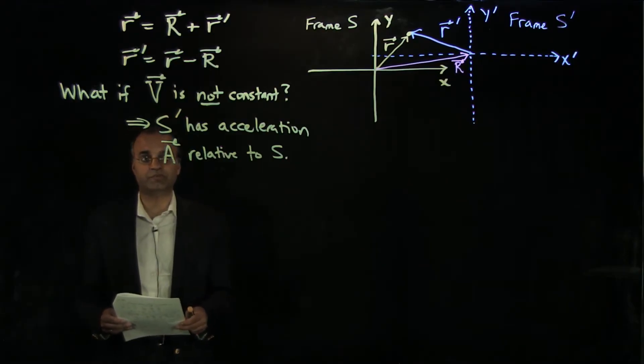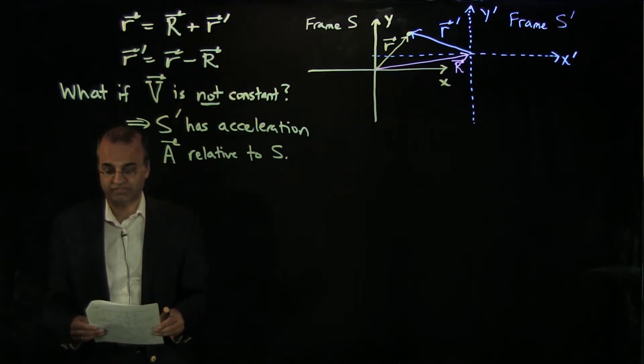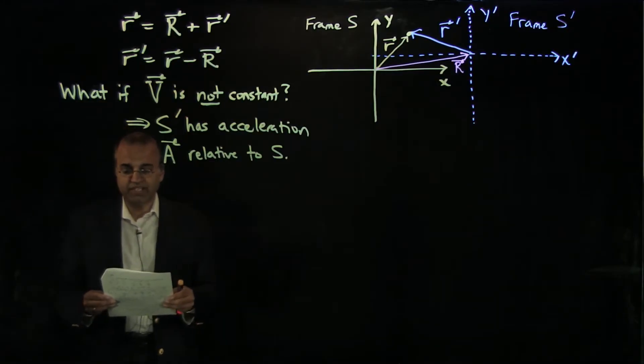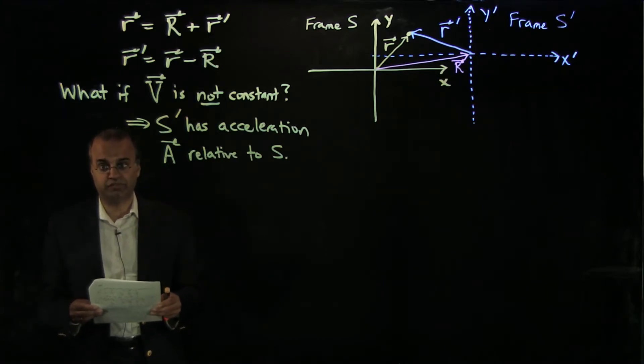So in this case, suppose that frame S prime has an acceleration, capital A, relative to S. We now say that S prime is a non-inertial frame because it is accelerated relative to frame S.